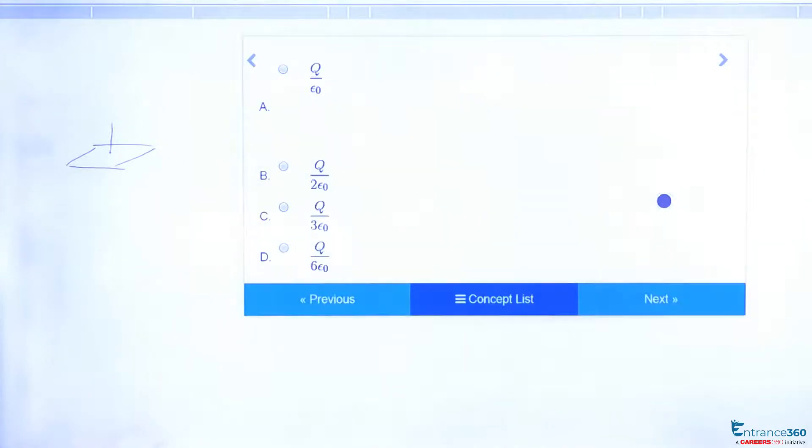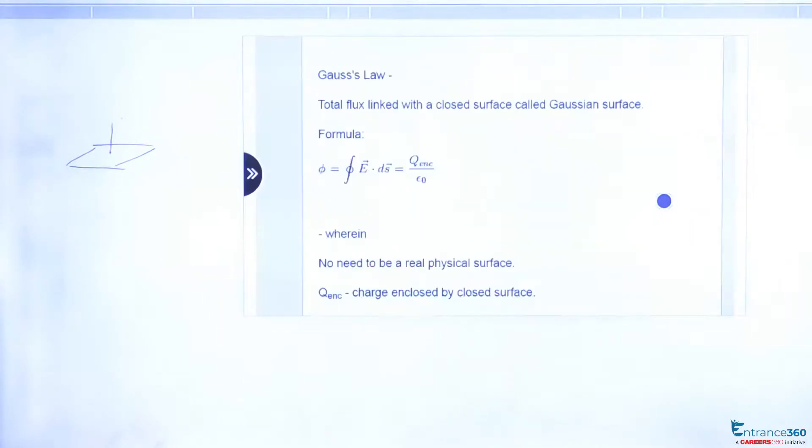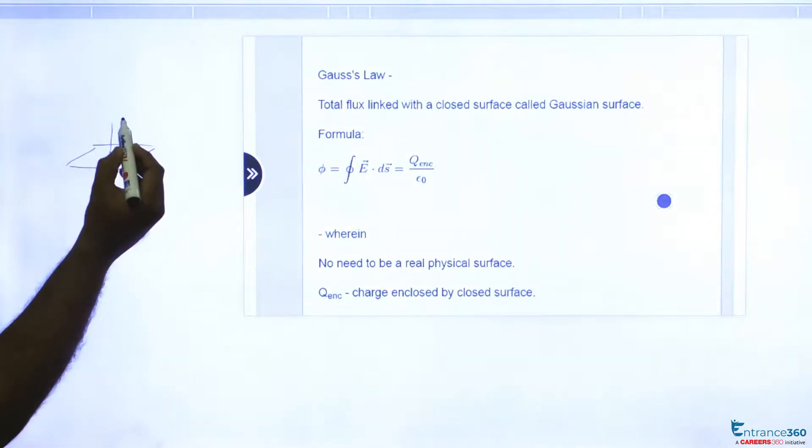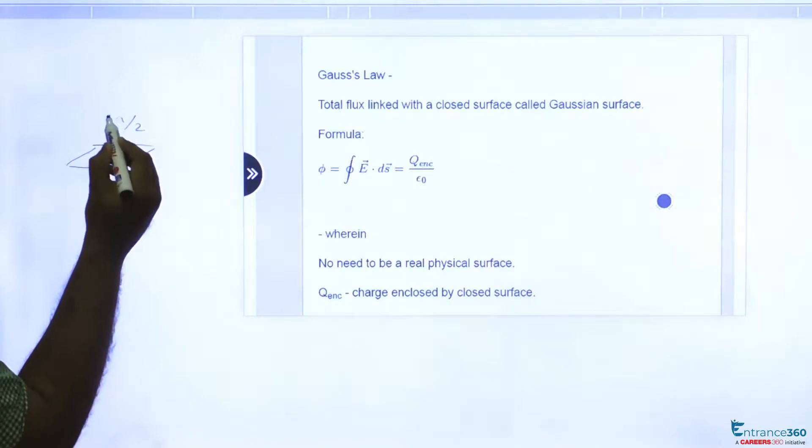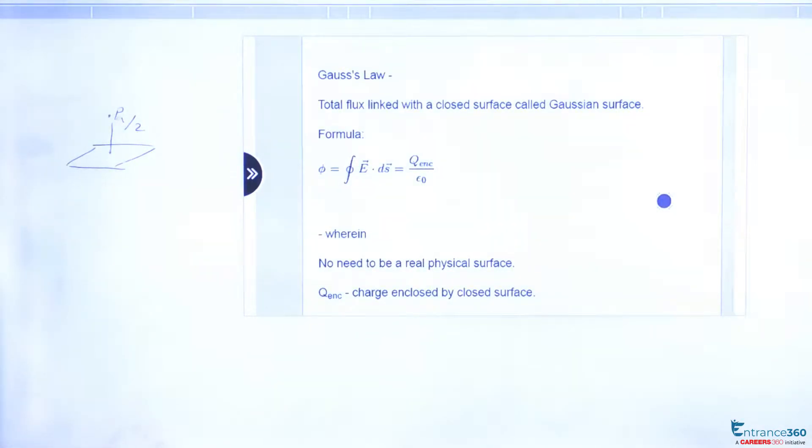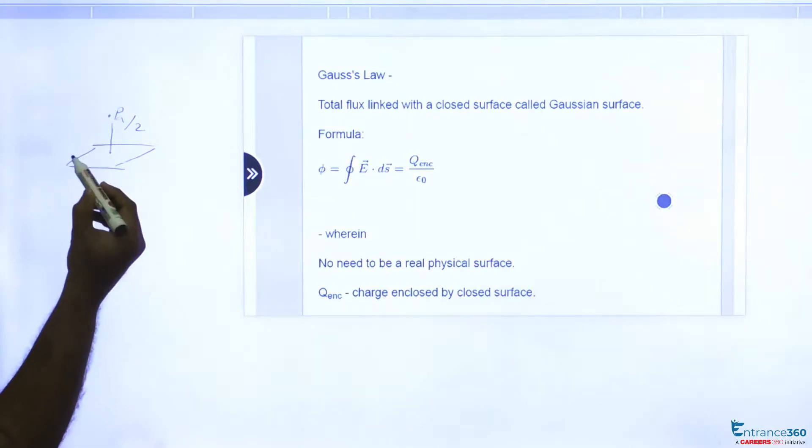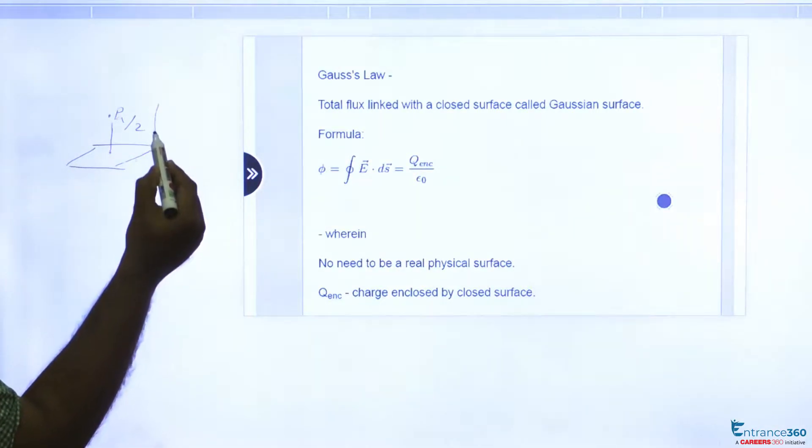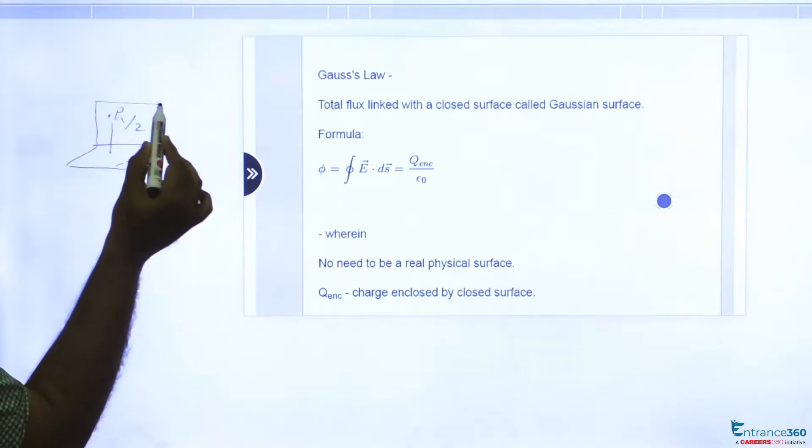at a distance a/2, we have a point P and we have to find electric flux through the square surface. So at a distance a/2 from point P, now by Gauss's Law we are assuming a cubical